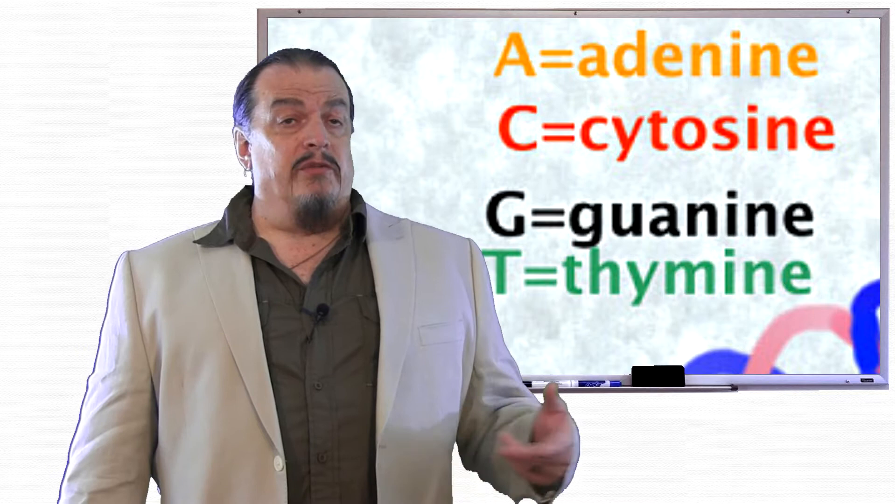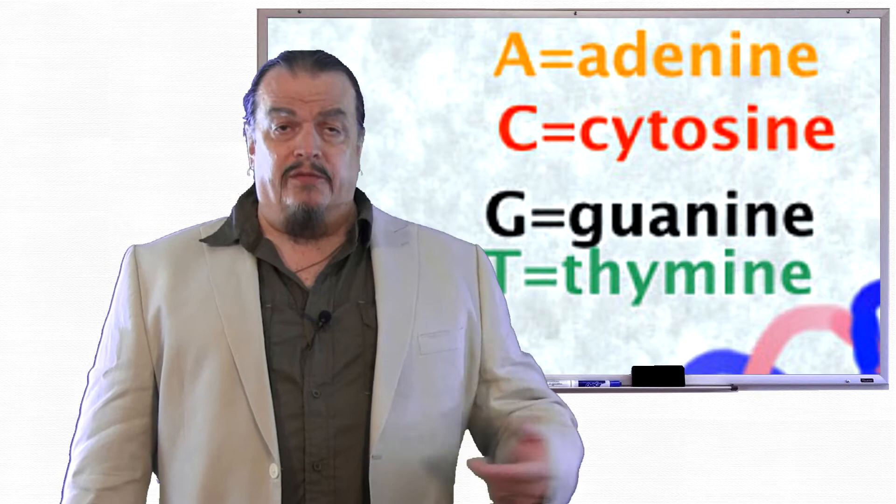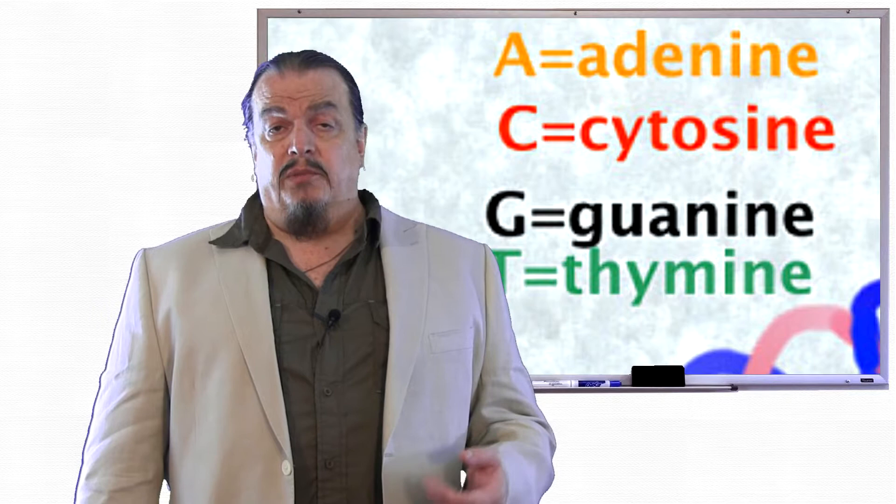And just like letters are units that together in different combinations make different sounds that form different words with different meanings, the letters A, C, G, and T stand for nitrogen bases that in different combinations form different amino acids that form different proteins when combined. Only when the letters in DNA that stand for nitrogen bases are combined, they don't form a word, they form what is called a codon.